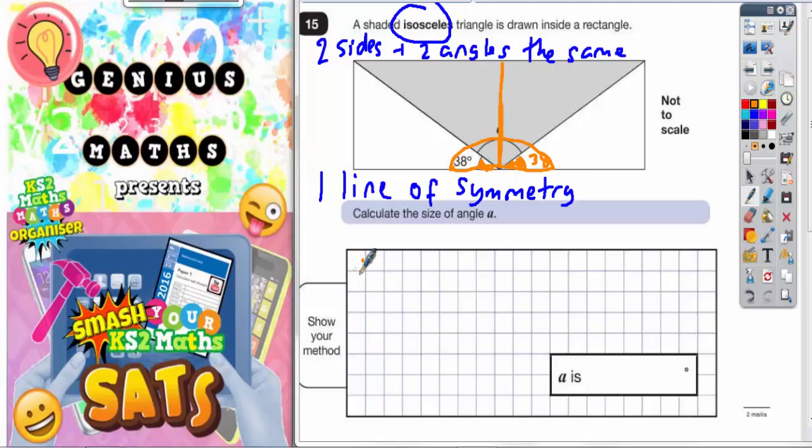So if we've got angles on a straight line add to 180, then we could add together these two 38s. So 38 plus 38, let's see what that comes to. We have 8 and 8 is 16, put the 6 in, carry the 1, 3 plus 3 plus 1 is 7, so 76 degrees.